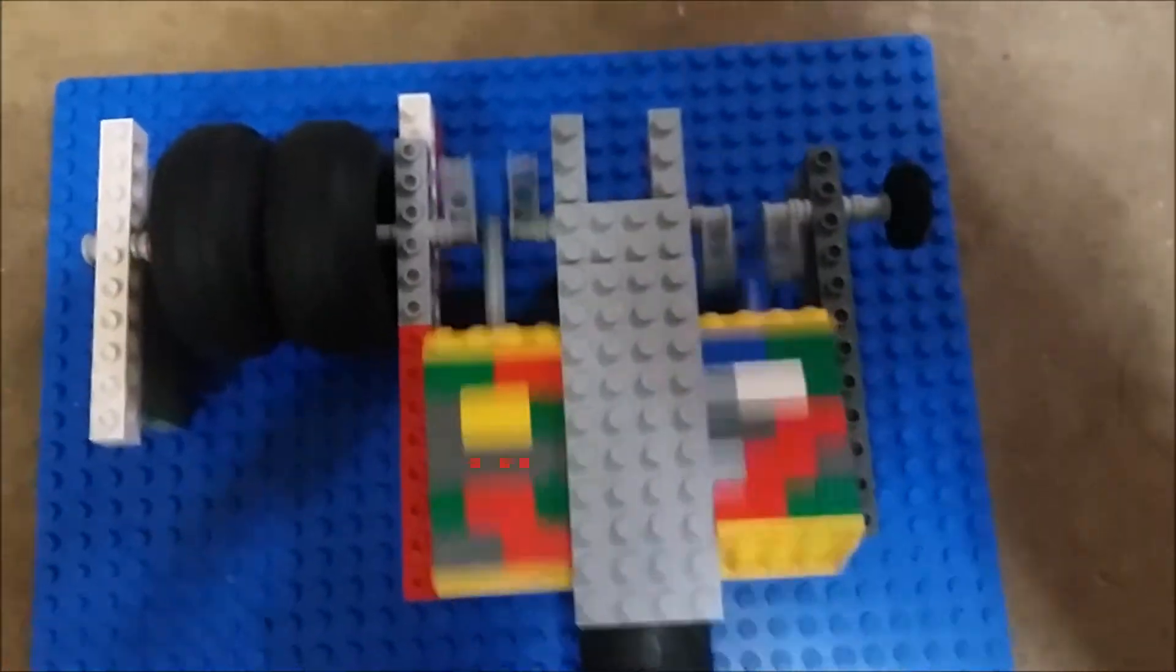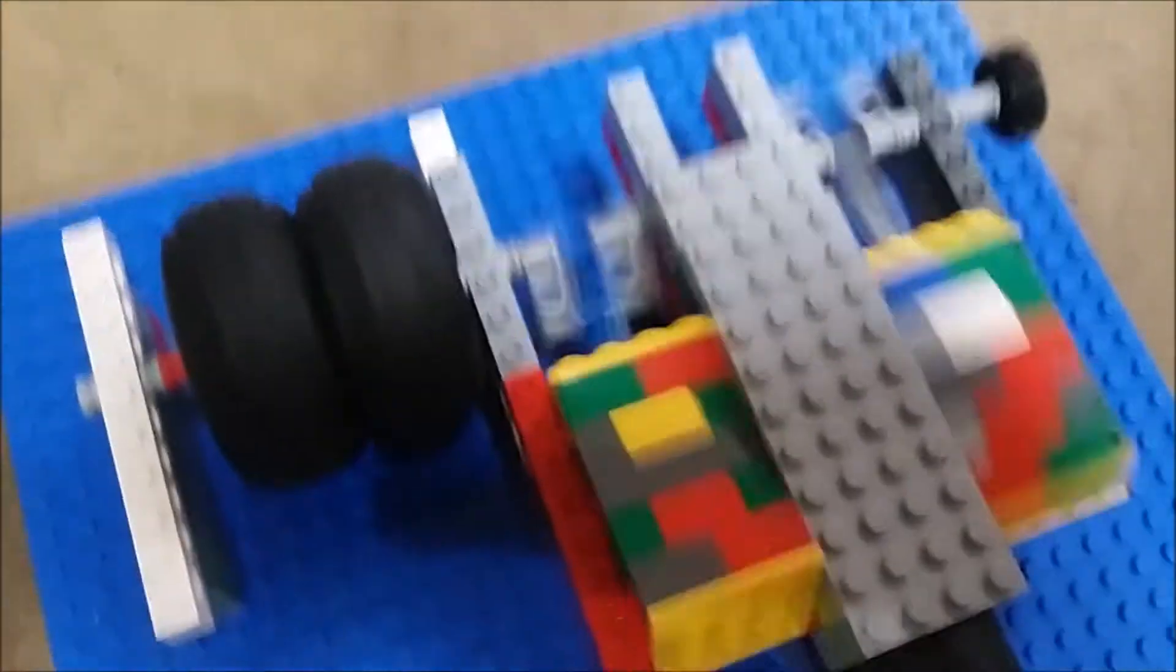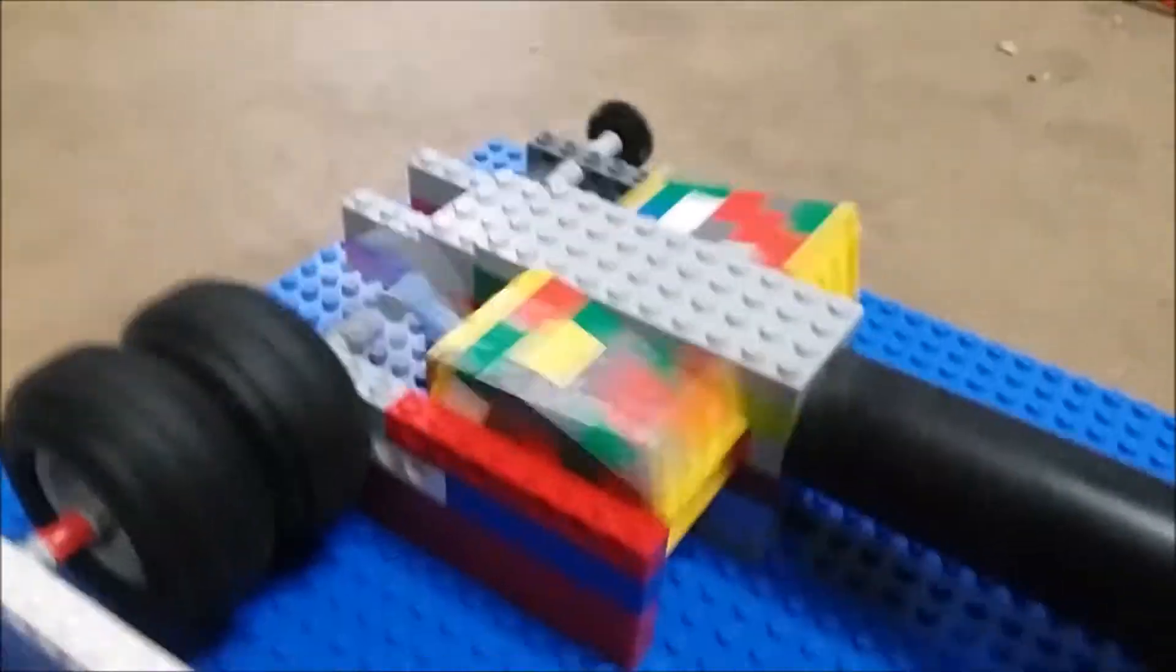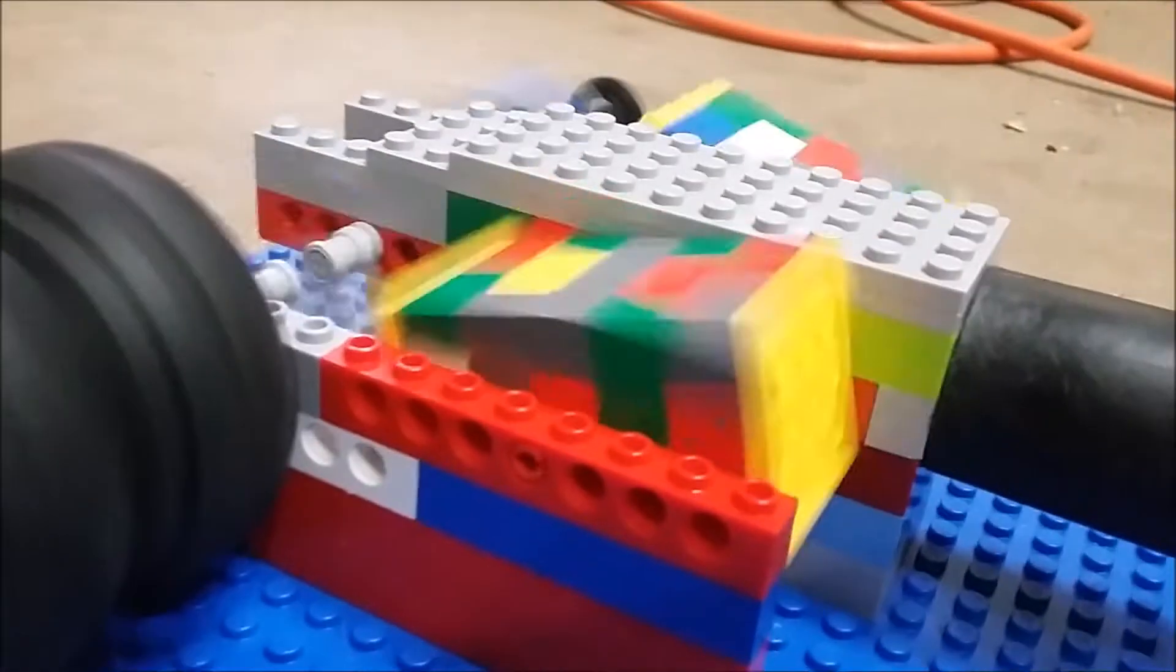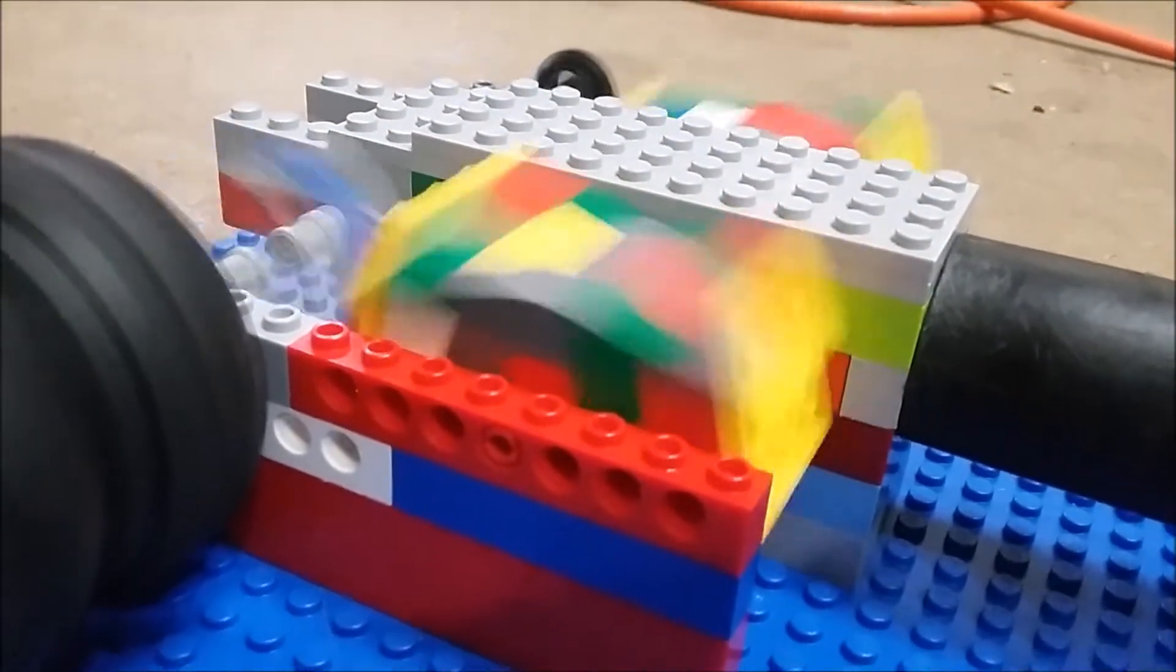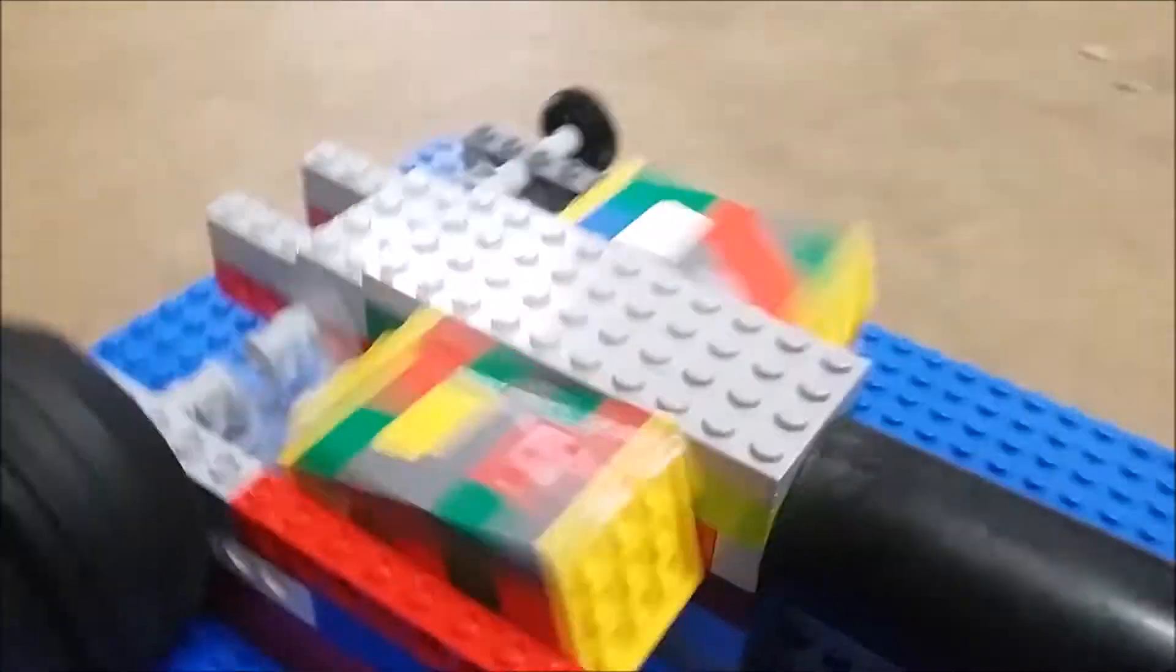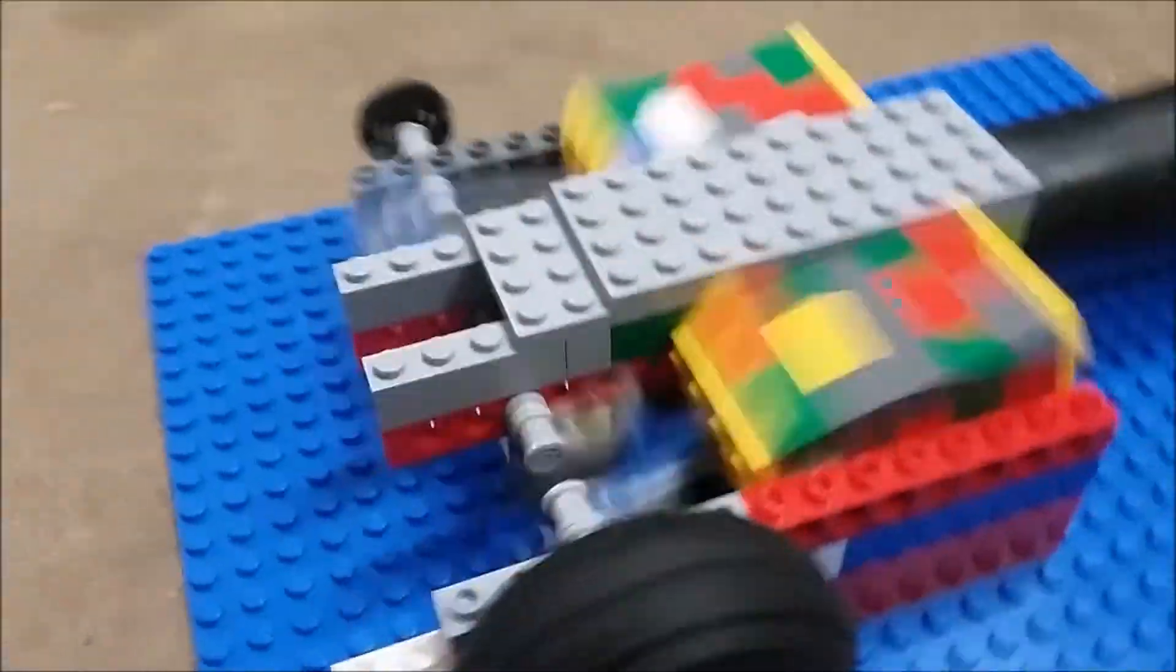This is the simplest design for a LEGO vacuum engine possible. It's basically a two-cylinder design that runs solely on vacuum power. As you can see, it runs pretty efficiently and at a pretty high speed, considering it's made out of LEGOs.